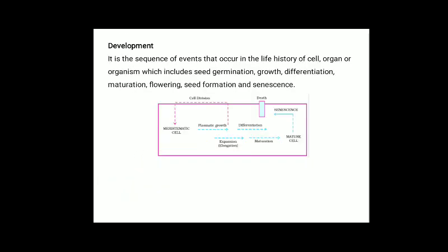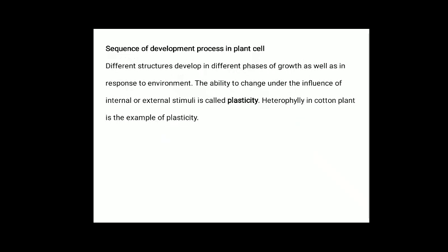Development is the sequence of events that occurs in the life history of a cell, organ or organism, which includes seed germination, growth, differentiation, maturation, flowering, seed formation, and senescence. Different structures develop in different phases of plant growth as well as in response to the environment. The ability to change under the influence of internal or external stimuli is known as plasticity. Heterophylly in cotton plant is an example of plasticity.